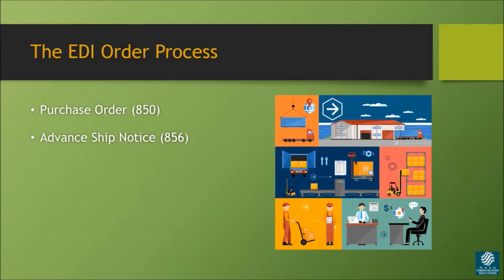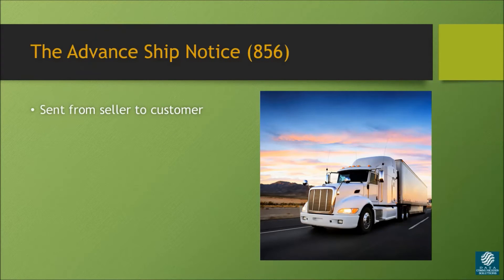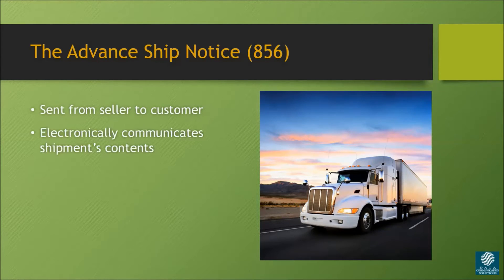Another important transaction in this process is the 856. The 856 refers to the ship notice or manifest, more commonly known as the advanced ship notice, or ASN for short. The 856 is sent from the seller to the customer to electronically communicate a shipment's contents.